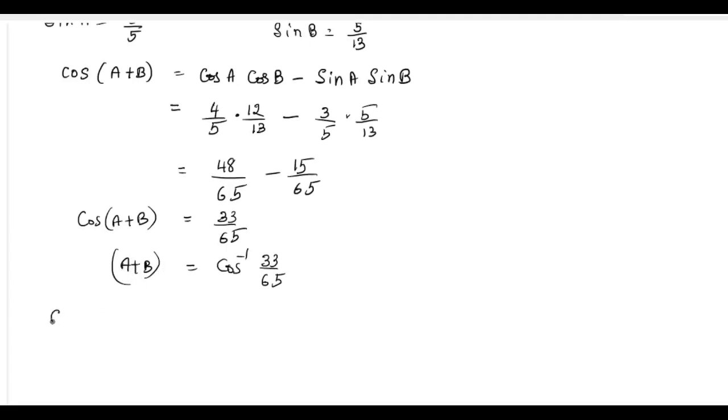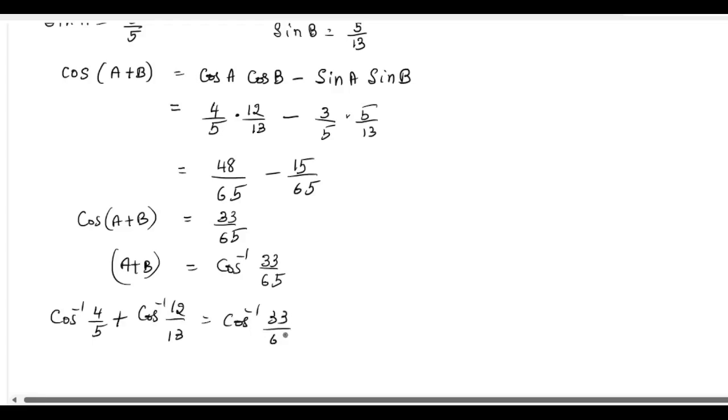So, replace it. Now cos inverse of 4 by 5 plus B is nothing but cos inverse of 12 by 13 which is equal to cos inverse of 33 by 65. This is the answer. Hence, proved.